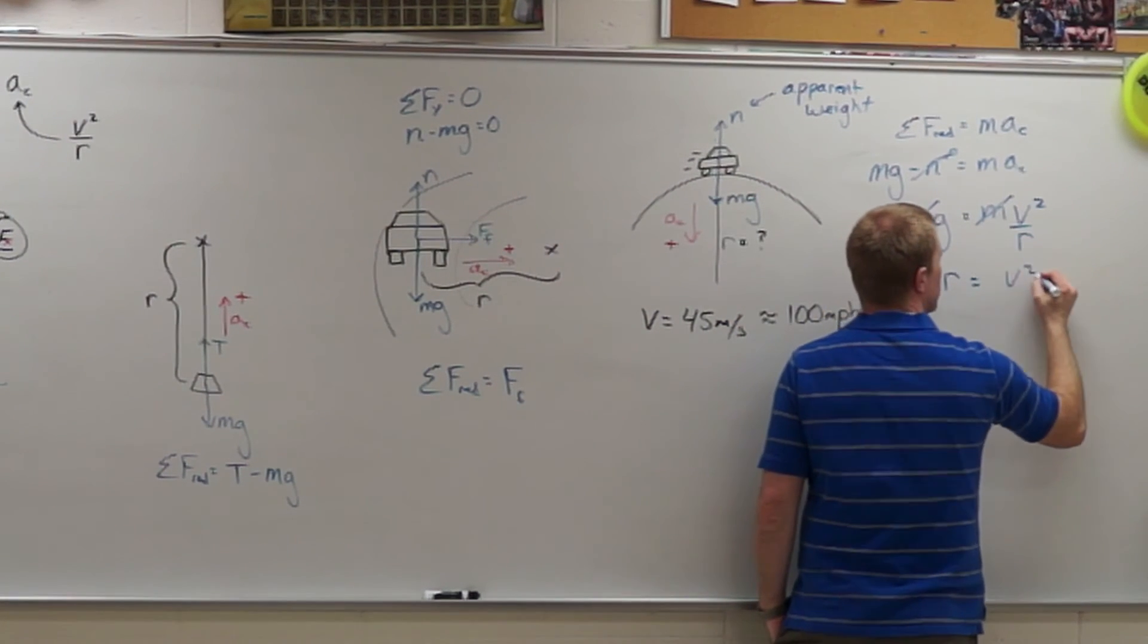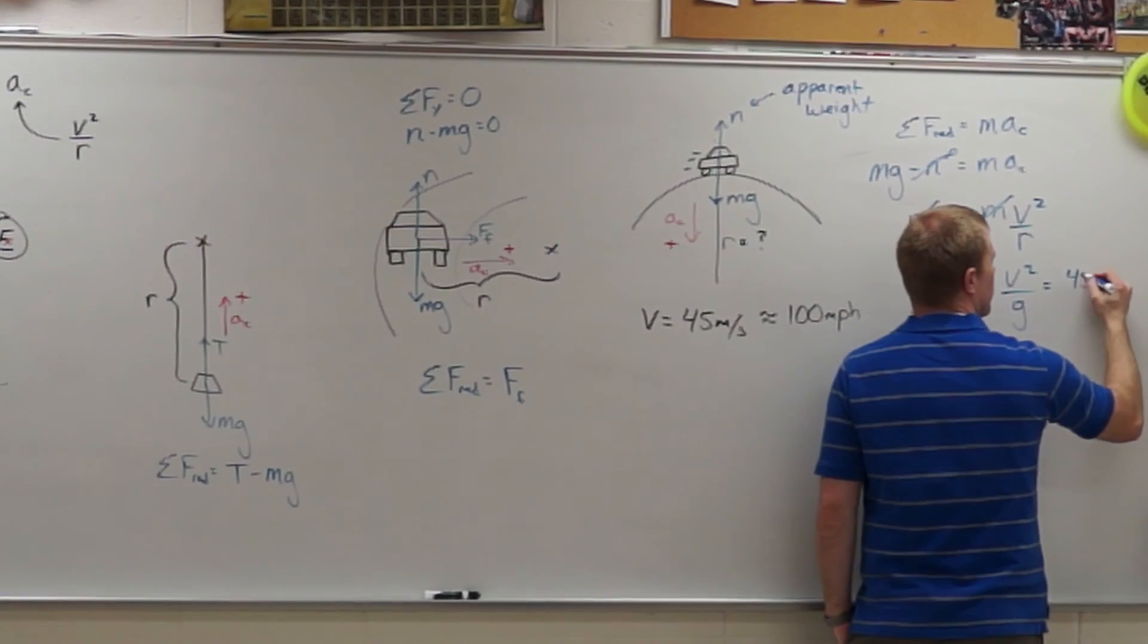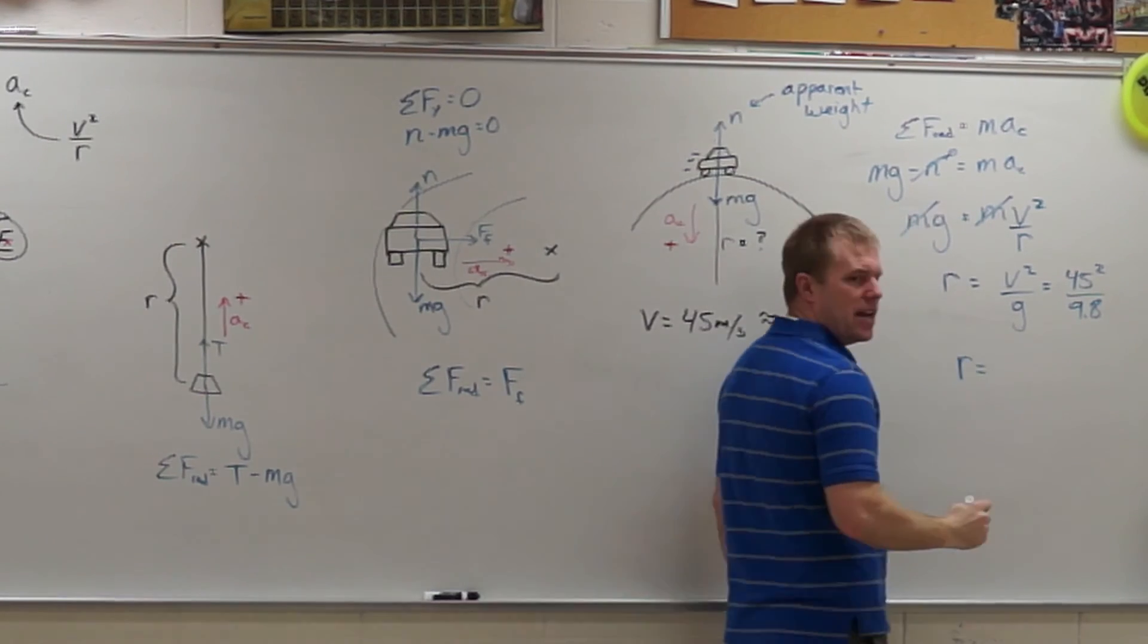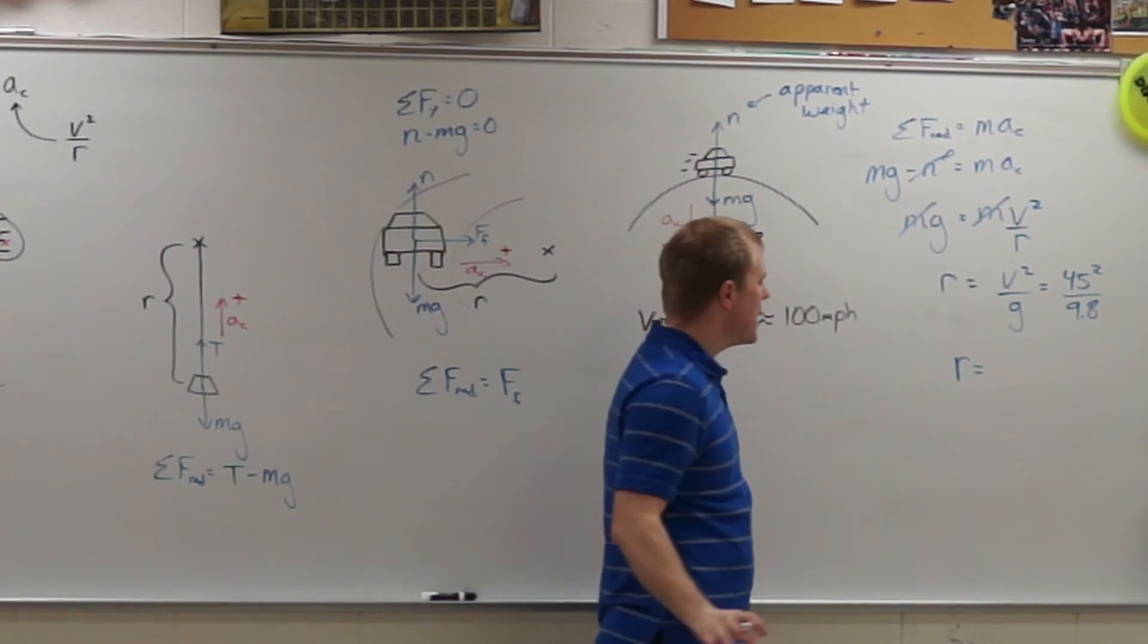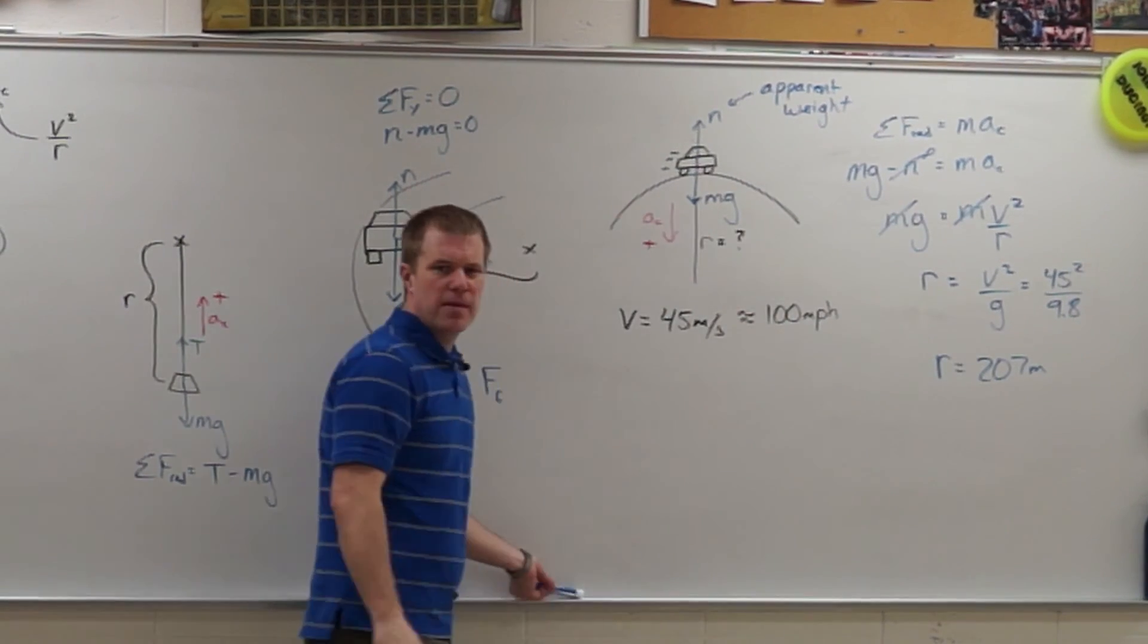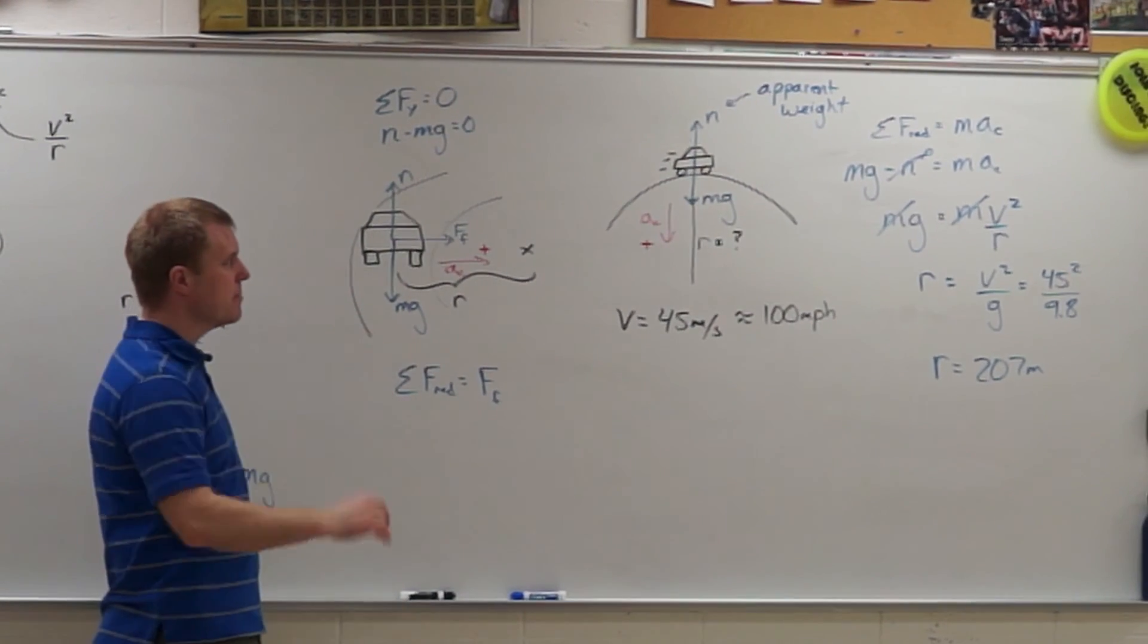So R is going to equal V squared over g. And I can plug in my numbers of 45 squared divided by 9.8. And I find out the radius of curvature I'm going to need to make it about 207 meters, so that people going under 100 miles an hour aren't going to catch air and be in a safety situation on that hill.